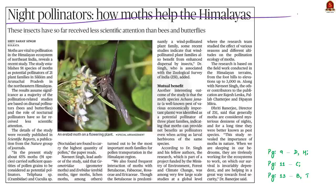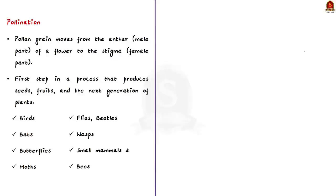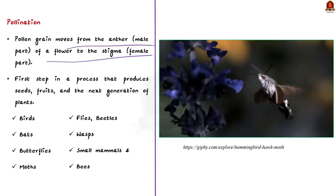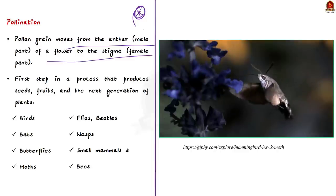This news article mentions a recent study on moths. These insects have so far received less scientific attention than bees and butterflies. The study establishes 91 species of moths as potential pollinators of 21 plant families in Sikkim and Arunachal Pradesh. In this context we'll learn about pollination and moths from a prelims perspective. Pollination happens when a pollen grain moves from the anther — the male part of a flower — to the stigma, which is the female part. This is the first step in a process that produces seeds, fruits, and the next generation of plants.